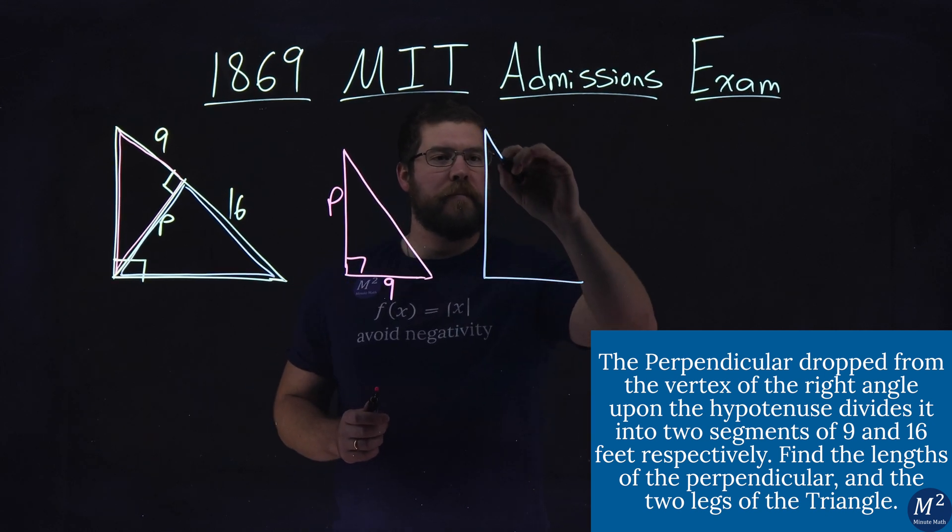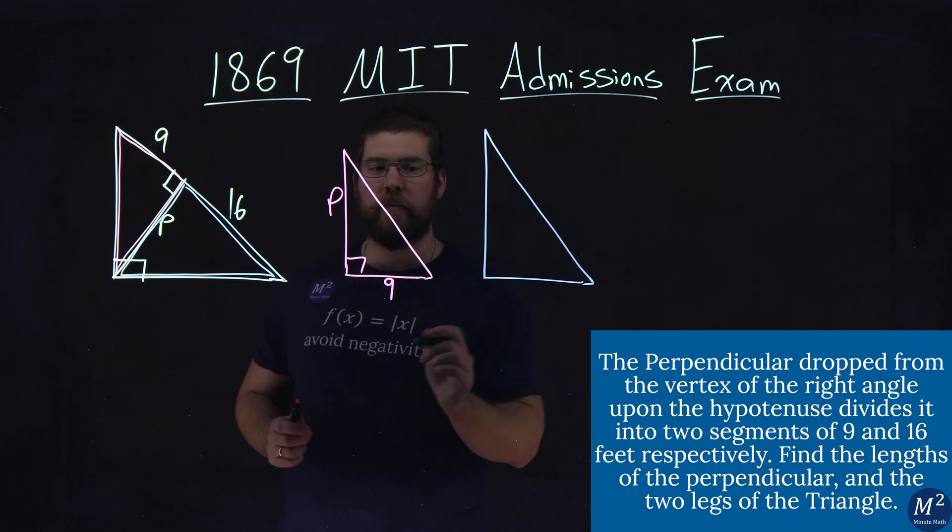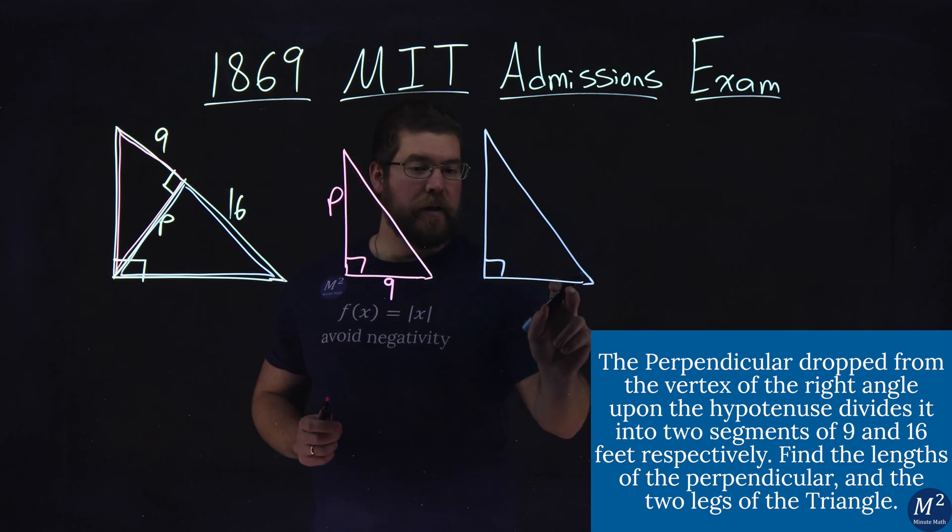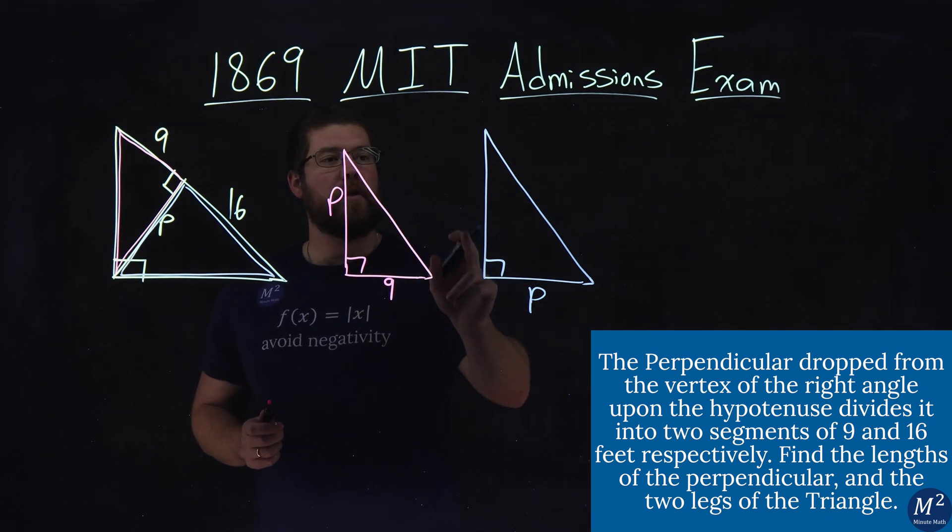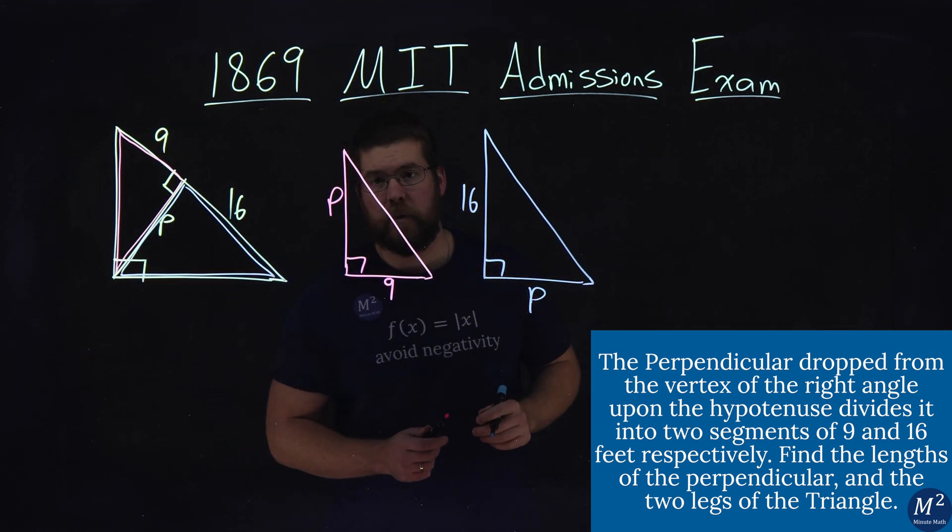The blue triangle, same idea. Now I'm not drawn to scale, it's a little bigger, but not too much. Just look at the numbers here, right angle. This shorter leg here is the length of p, the same as this one right here, but the longer leg here is 16.